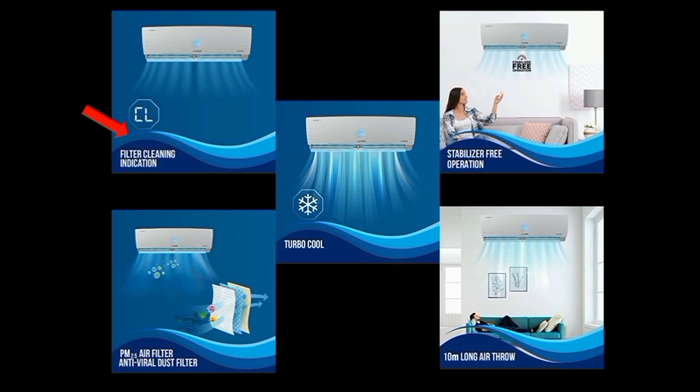Next, the AC has a high-key spec called filter cleaning indication — abbreviated as CL. If the filter on the AC gets dirty, the display will show a signal indicating that you need to clean the AC filter. Another option is the PM2.5 filter. If there are PM2.5 particles in the room, this filter can help remove them.